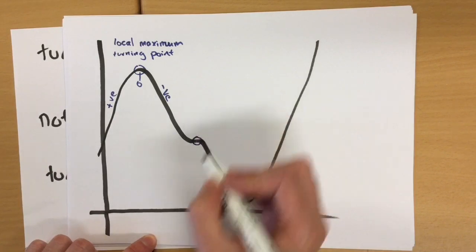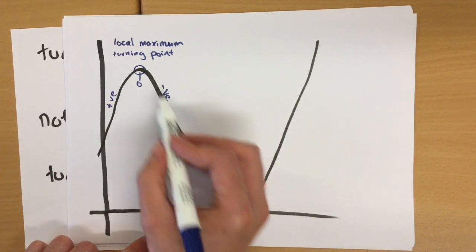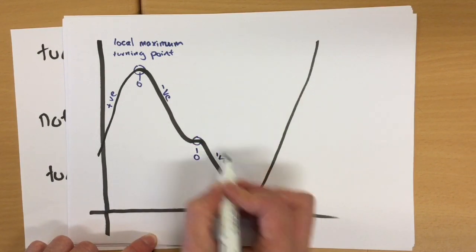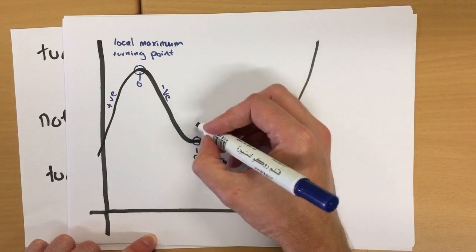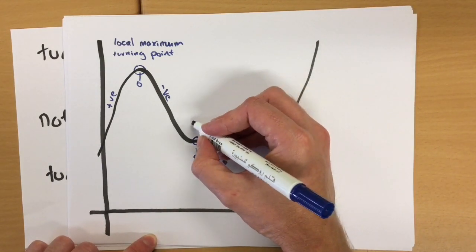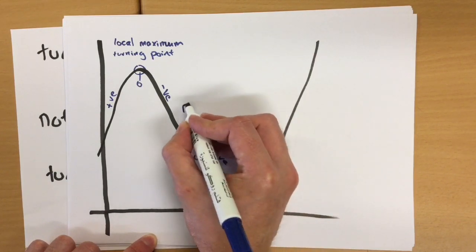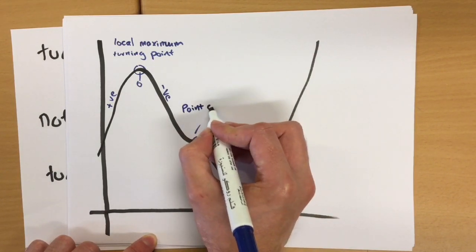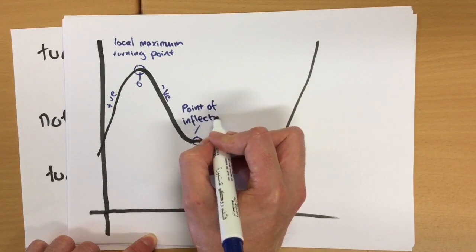In the point here, the gradient is also zero, but there's no turn in the graph. We're just carrying on negative here and negative there again. And we call this the point of inflection. So that is the point of inflection.